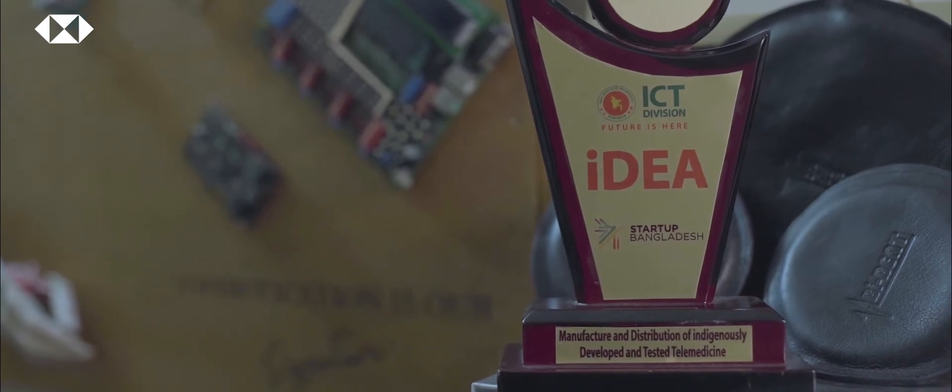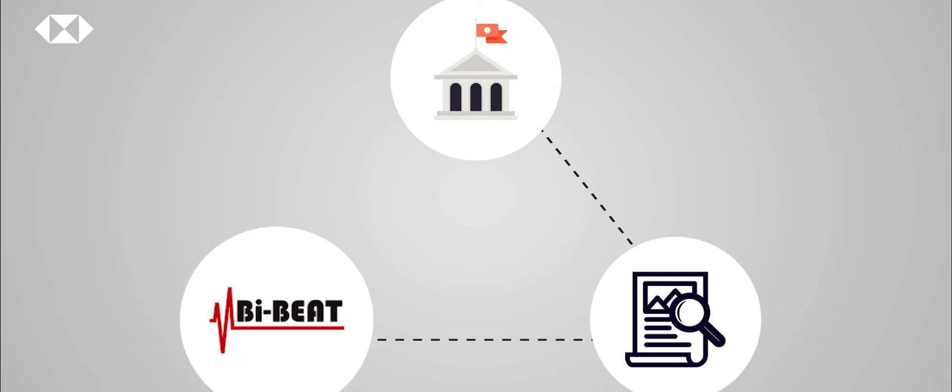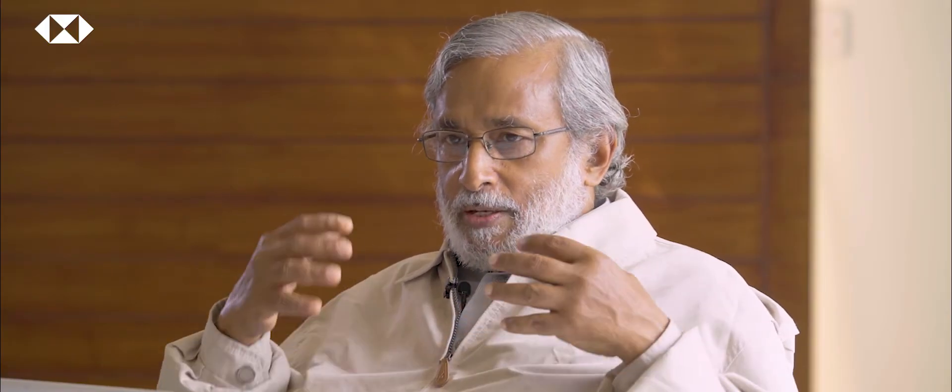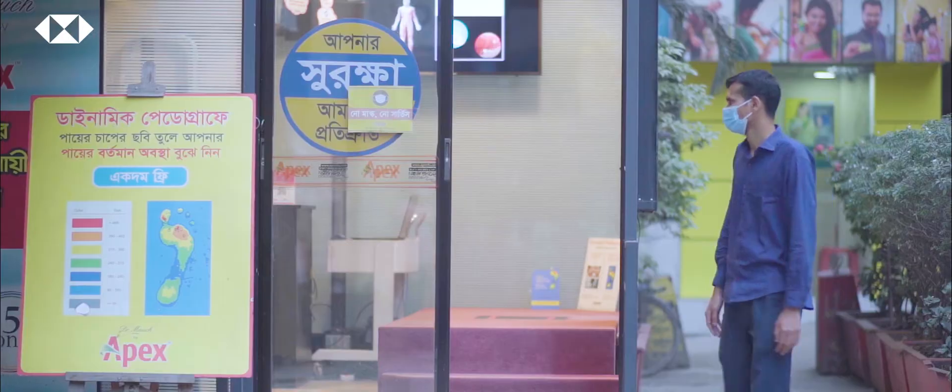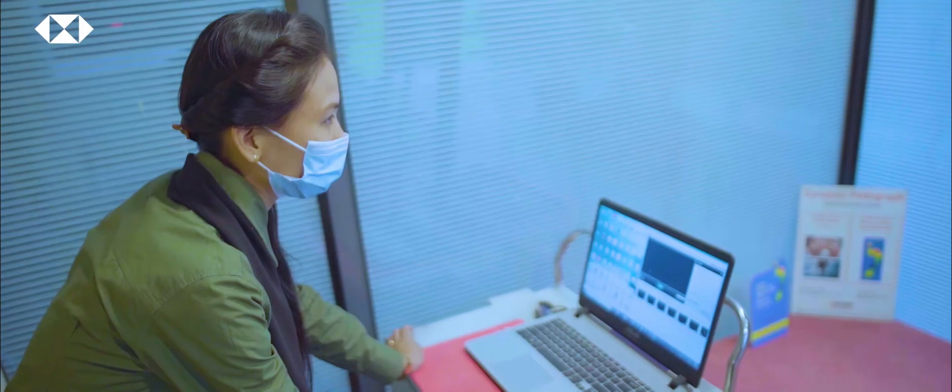Our future vision for By Beat: we don't want to become a giant. Therefore, we have come out with a model we call a triangular model with the university on the top and research institute and a company like By Beat. So these three together innovate new technology, new ideas, and put it into the market where it is commercially feasible.